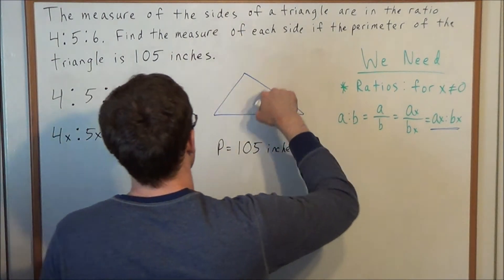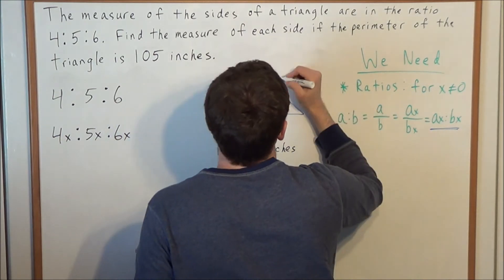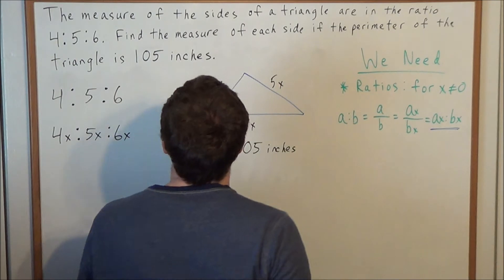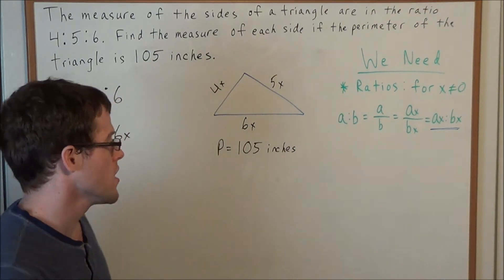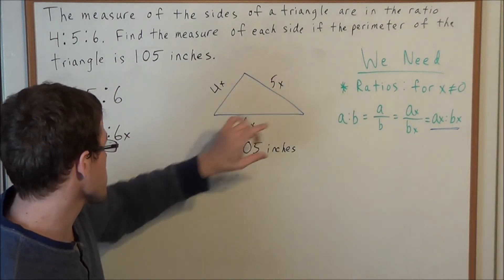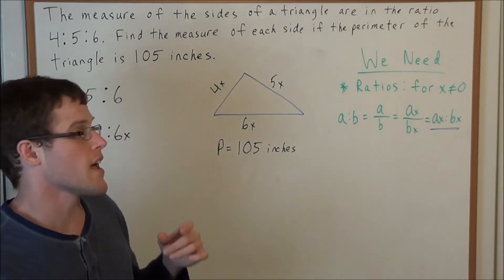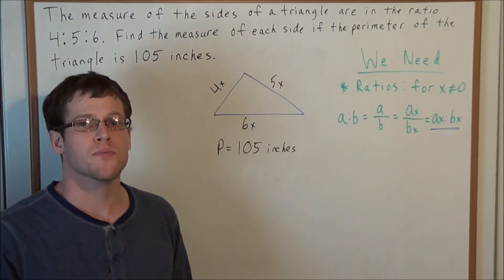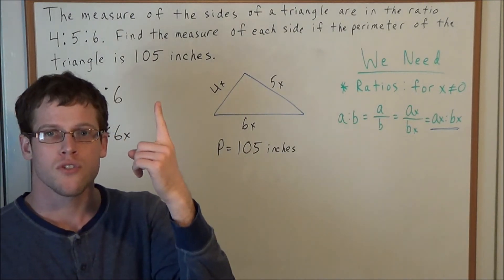then we could express the sides of this triangle as 4x, 5x, and 6x. The sides are in a ratio of 4 to 5 to 6. If this represents all the ratios that reduce to 4 to 5 to 6, our solution is at least one of them. The perimeter of 105 inches helps us reduce this list of infinite possibilities to just one case.